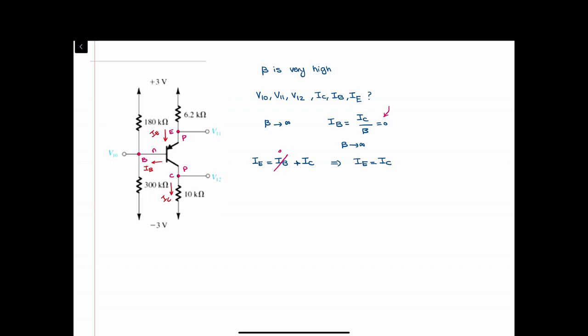Looking at the circuit, if we examine the emitter part of the BJT, we can write a KCL equation: (3 - V11) / 6.2kΩ. Since IE equals IC, we can equate this to (V12 - (-3)) / 10kΩ. This gives us one equation, but we'll come back to it later.